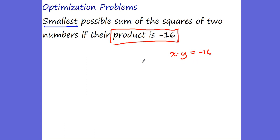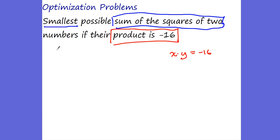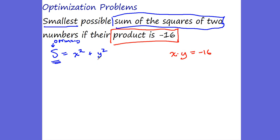Now we're going to develop an equation for the sum of the squares of two numbers. I'm going to put S for sum of the squares of two numbers. I'm going to square X and square Y, so S equals X squared plus Y squared. We want to optimize this sum — this is what we're optimizing. Which means this is what we're going to take the derivative of. We have to use the red constraint equation to substitute in for one of these variables.